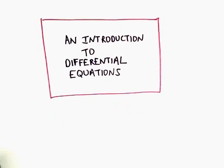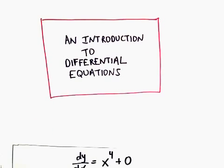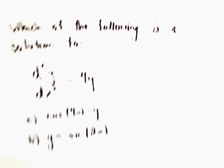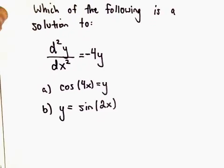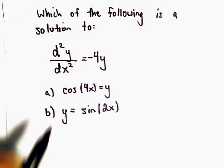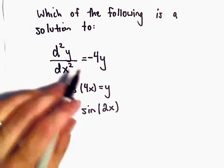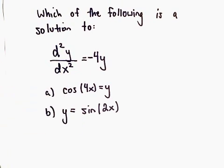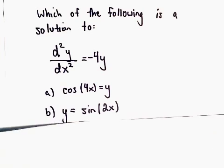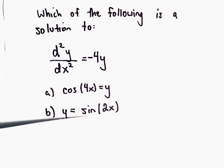Let's look at one other — very similar idea. Now, instead of just a first derivative, we've got a second derivative. So the second derivative with respect to y is negative 4y. We have these two functions, and we want to know which one — potentially both — could be solutions.